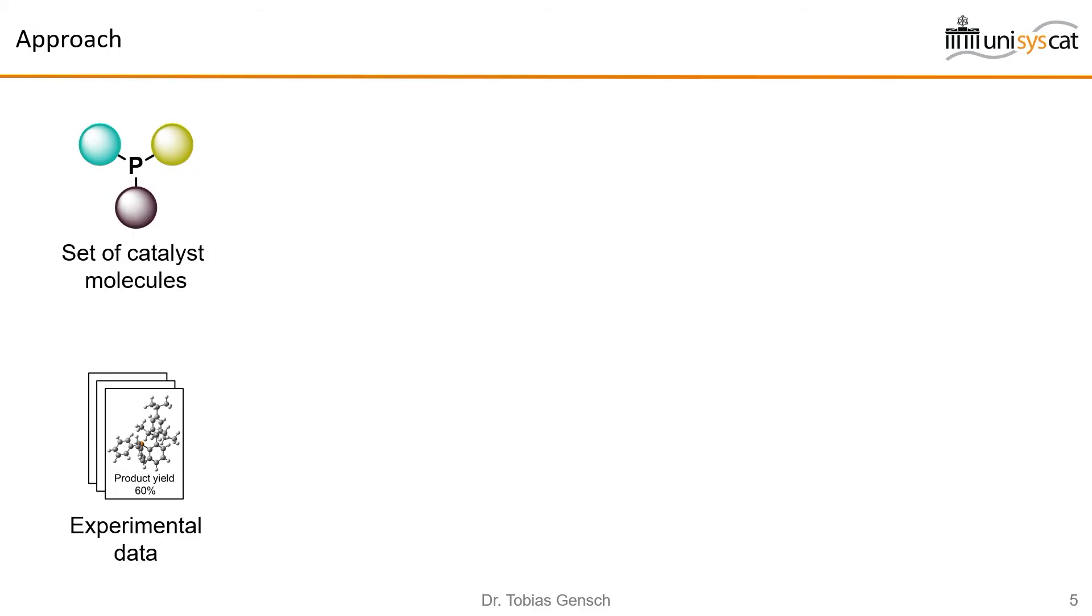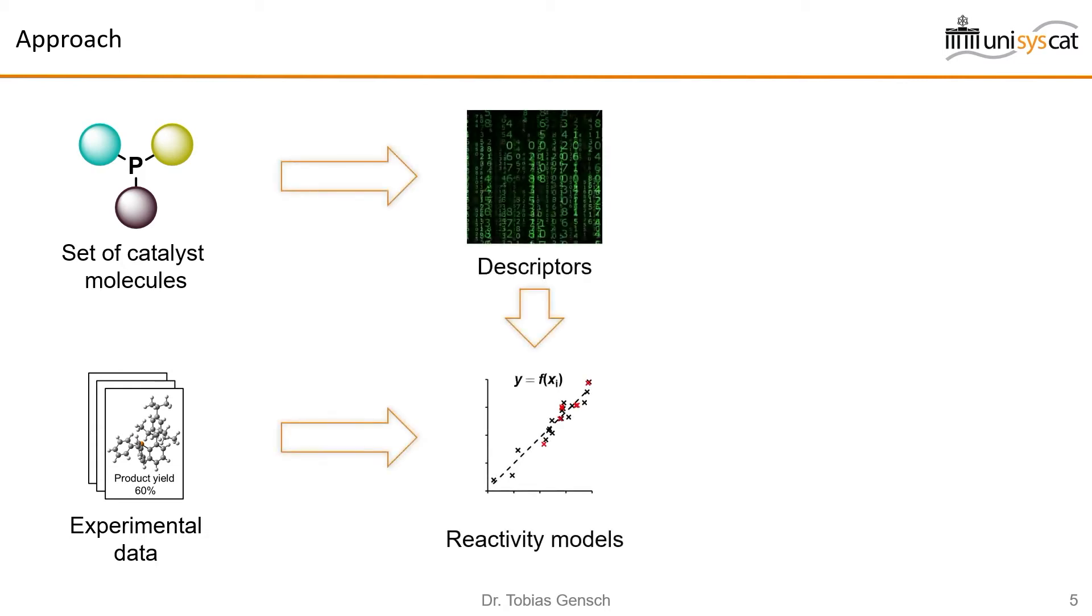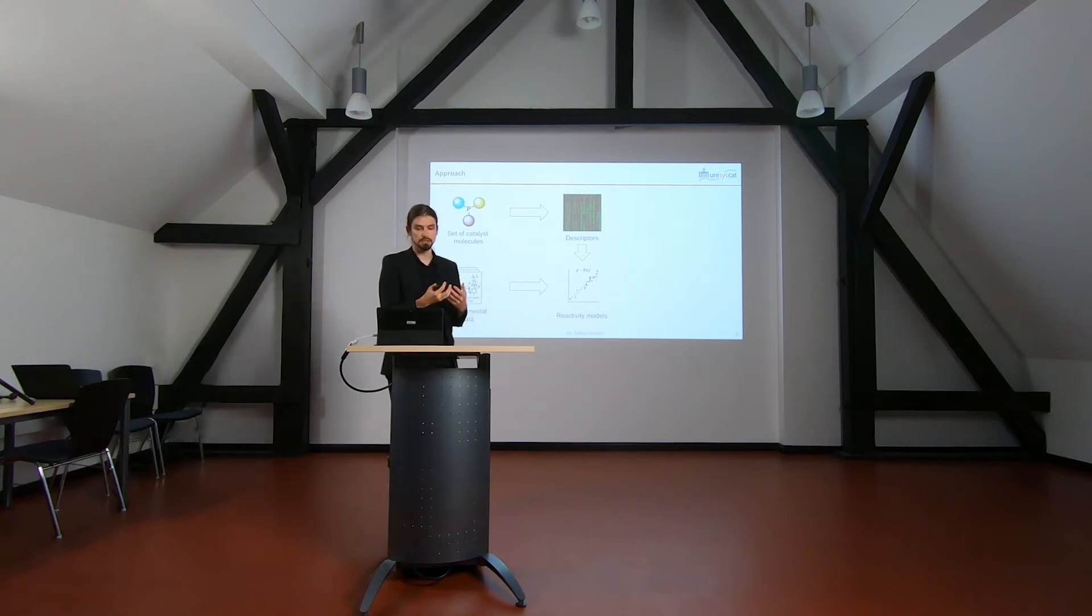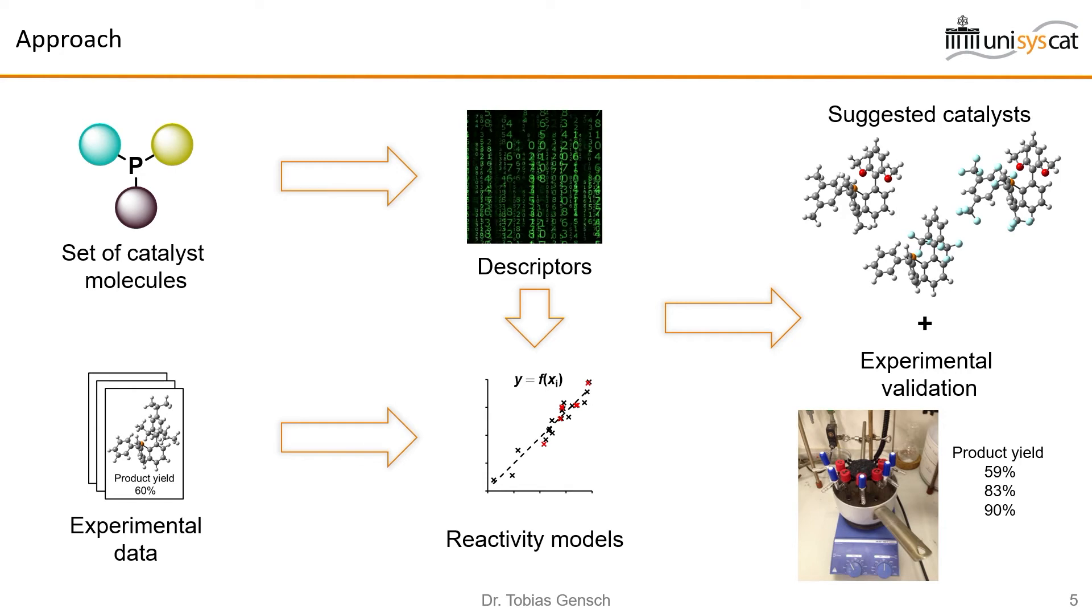We start with a set of molecules and some associated experimental data. Then broadly speaking the idea is to somehow translate what the molecule looks like to a computer, and then we could hope to connect whatever we've chosen to describe the molecules with the experimental data to find models that can explain and predict this chemical reactivity and suggest new structures that we can then take to the experiment for validation.